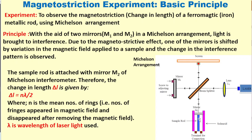This metallic rod is inside a solenoid which changes its length when we apply some magnetic field. Due to change in the magnetic field, the optical path changes or there is some path difference, and there will be change in the interference pattern.